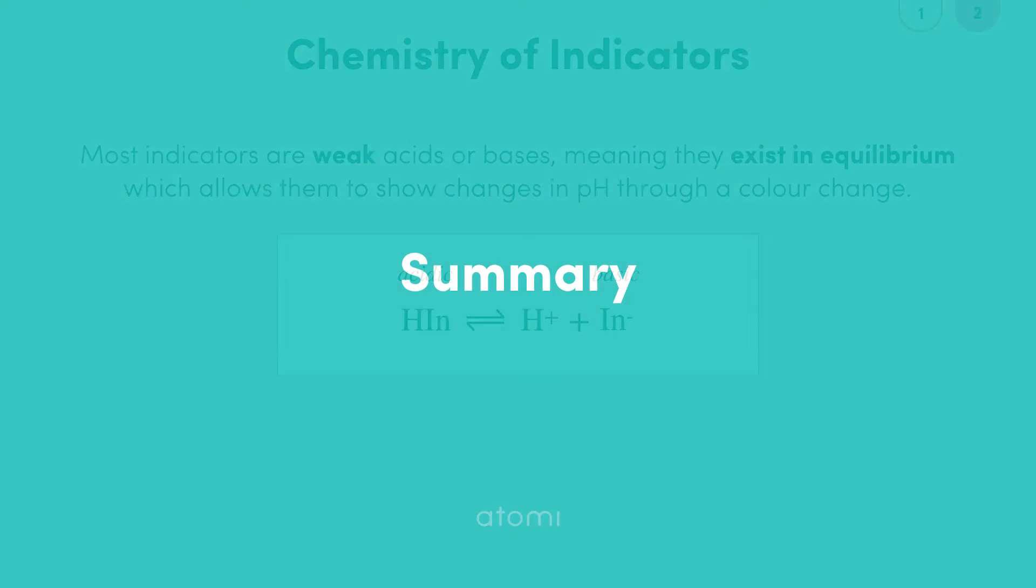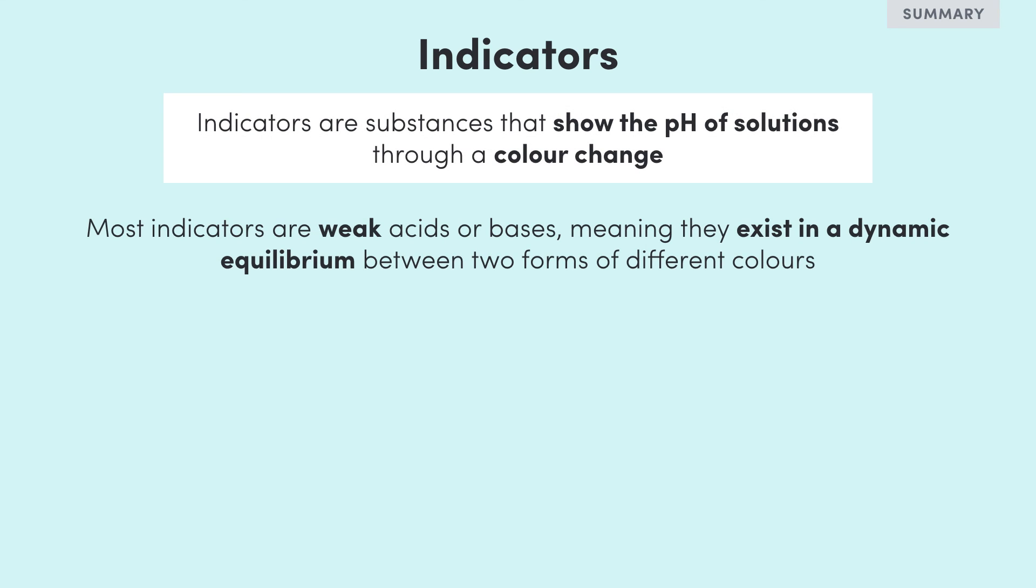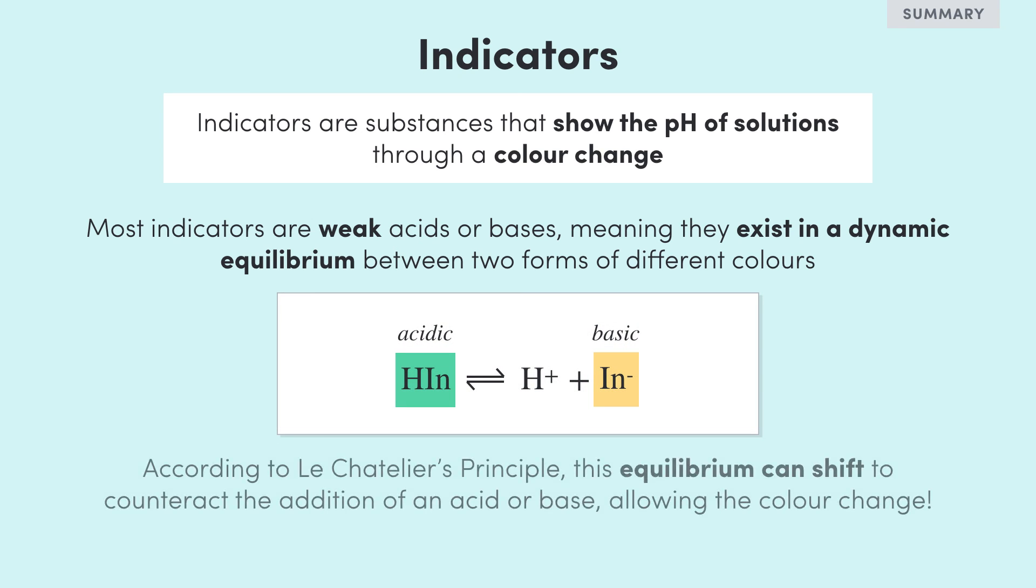And that's it for this video. We've looked at indicators which are substances that show the pH of solutions through a color change. This is because most indicators are weak acids or bases and they exist in a dynamic equilibrium. Depending on whether an acid or base is added the equilibrium will shift to counteract these changes. Importantly indicators can exist in two forms which are different colors allowing them to change color. From this color change we can then observe the acidity or basicity of a substance. See you next time!